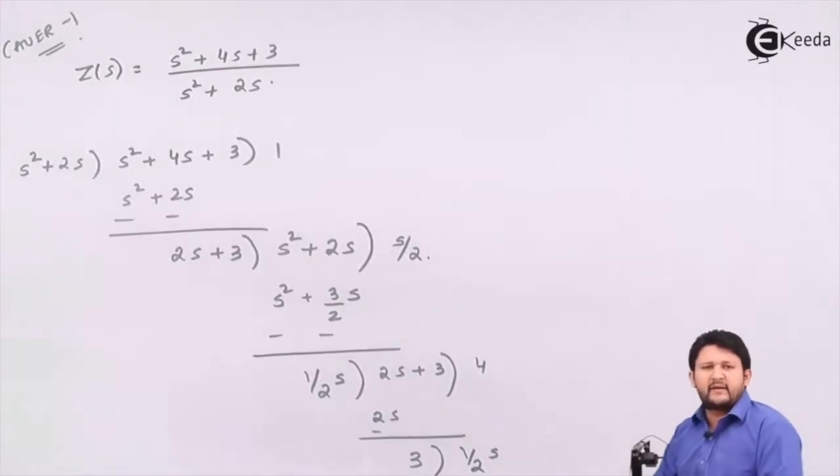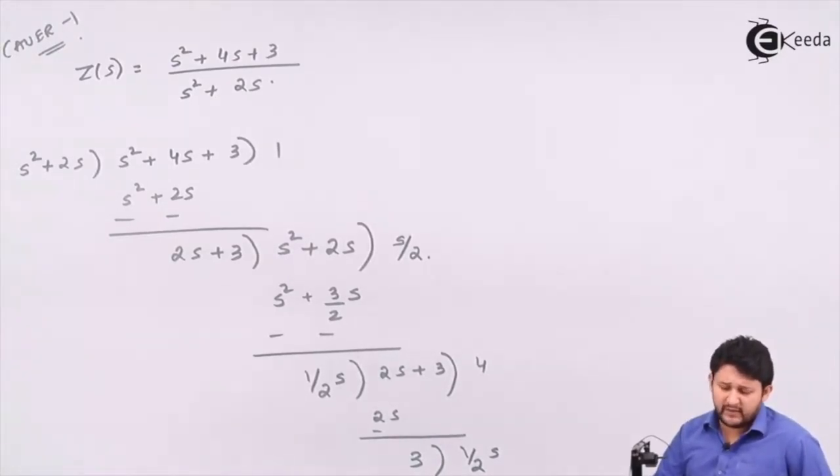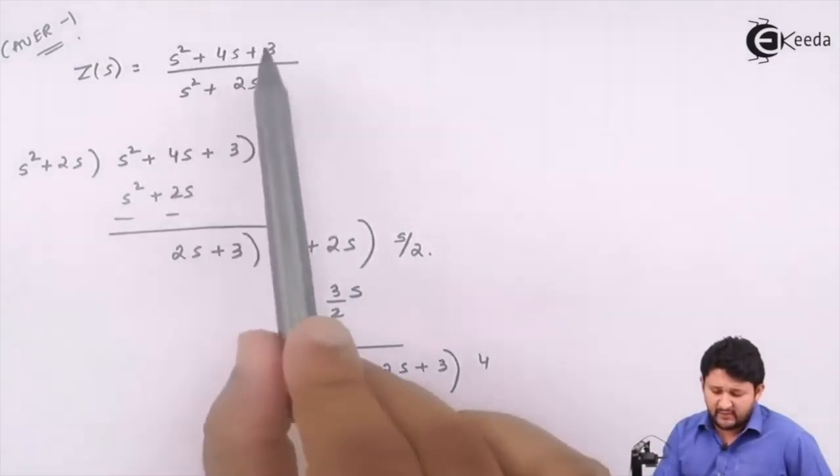What we did in Horwitz. The only difference between Cauer Form 1 and Cauer Form 2 is that in Cauer Form 1, the terms are arranged from highest to lowest power, and Cauer Form 2 is arranged from lowest to highest power.